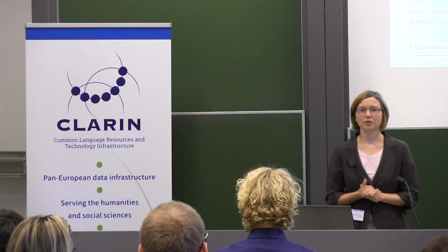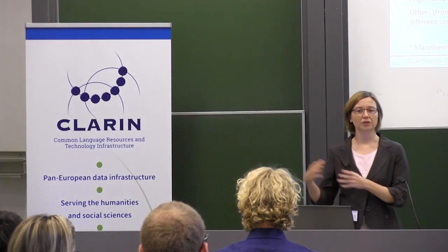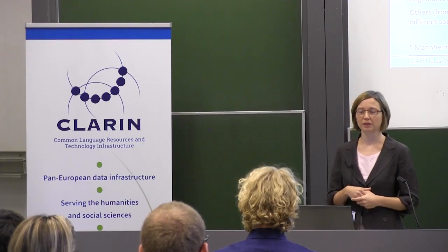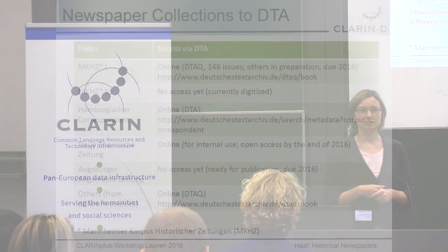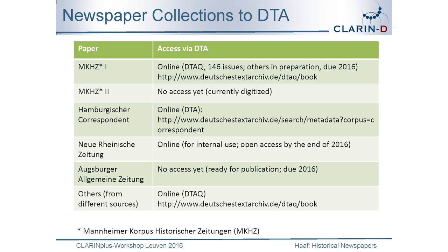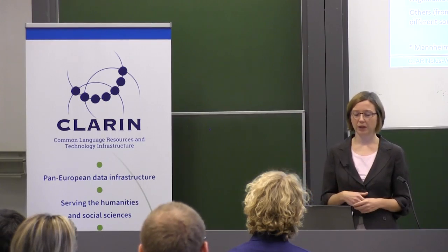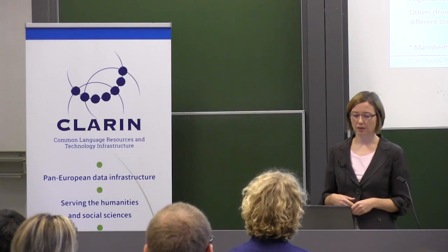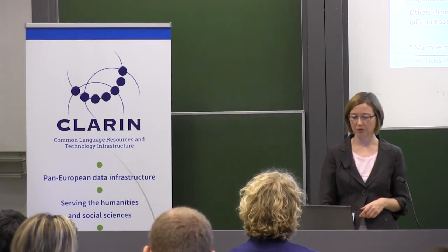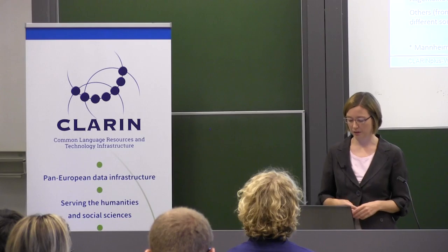We try to provide access to the newspapers over time through our platform. Some are already online — the Hamburg newspaper is completely online via the DTA platform. Some are still in the DTAQ queue for quality steps, and others are in preparation and will be released via our platform, most of them by the end of this year. The Mannheim Corpus of Historical Newspapers is currently being digitized and may take a little longer.